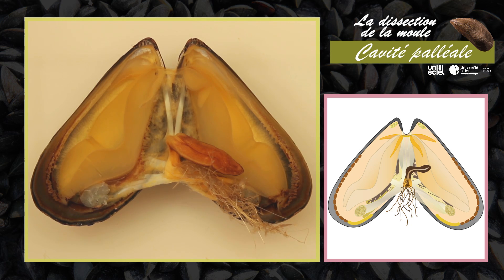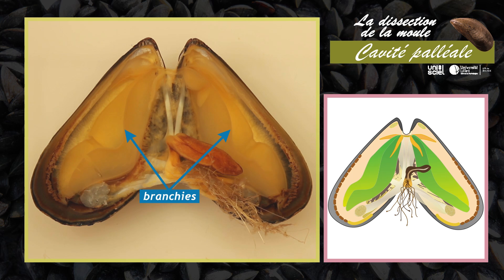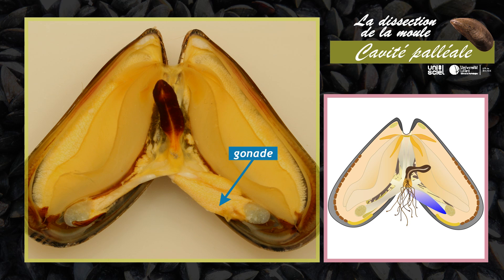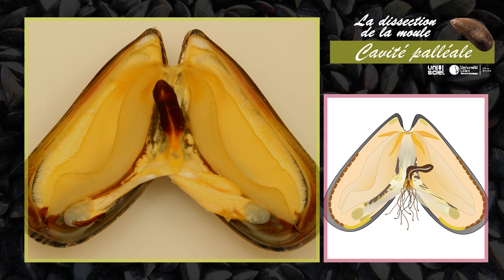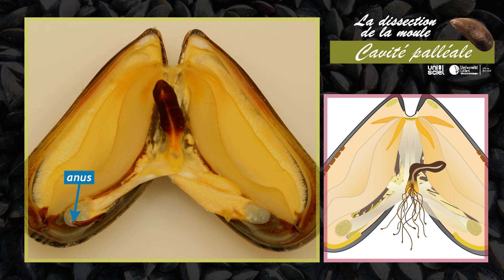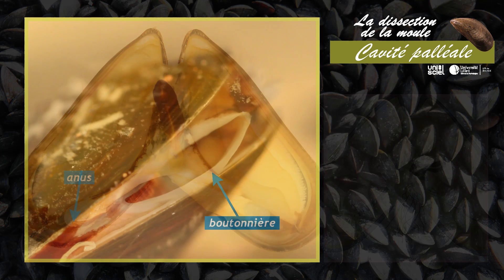De part et d'autre de la masse viscérale sont visibles deux feuillets branchiaux de grande taille. À la base des branchies sont présents les reins de couleur rouge sombre. En arrière du bissus, la gonade impaire forme une protubérance communément appelée bosse de polychinelle. Les conduits génitaux se terminent par les papilles urogénitales situées à la base de la gonade. L'anus débouche en arrière du muscle adducteur postérieur au niveau de la boutonnière.